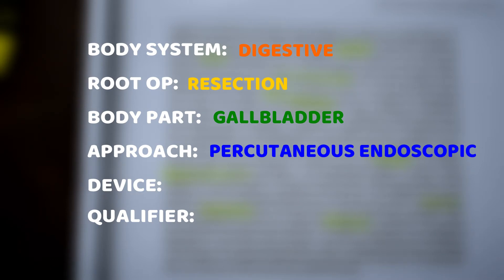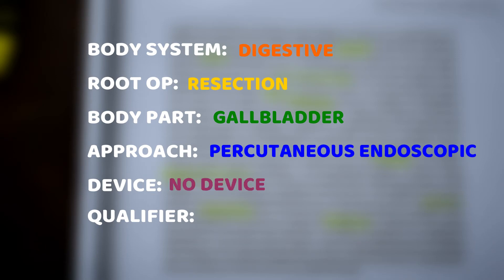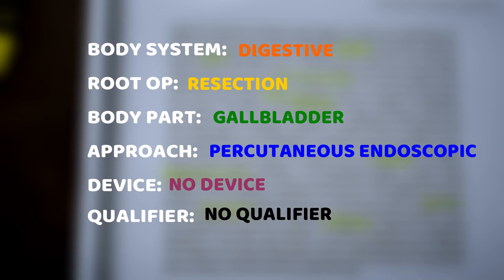The approach is percutaneous endoscopic. I'm going to say that because they talked about the trocar — which is the needle and the tube — and then they brought out the gallbladder through a port. They didn't say anything else about visually with their eyes seeing the gallbladder; they were using that laparoscope that went through the trocar incision. No device was used — they're just taking out the body part. The catheter they put in for the cholangiogram was removed right away when they were done; that isn't something permanently staying there after the surgery, so no device. And I don't think there will be a qualifier — I haven't seen anything that would indicate a qualifier or that more information would be needed.